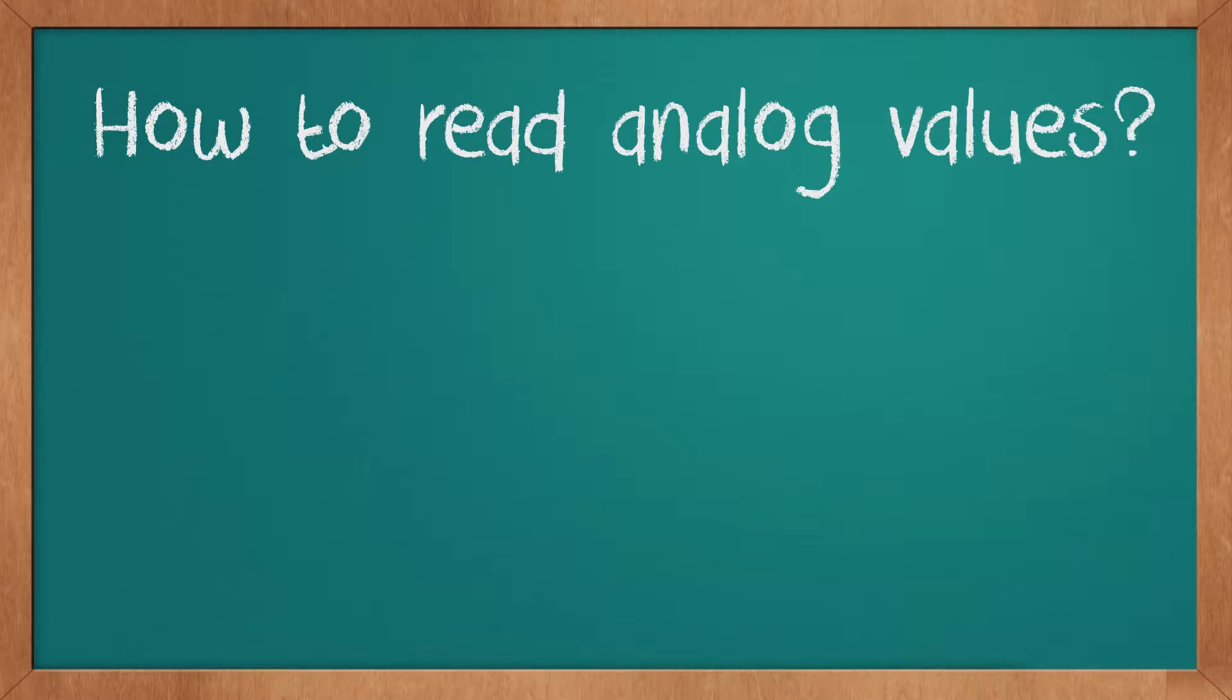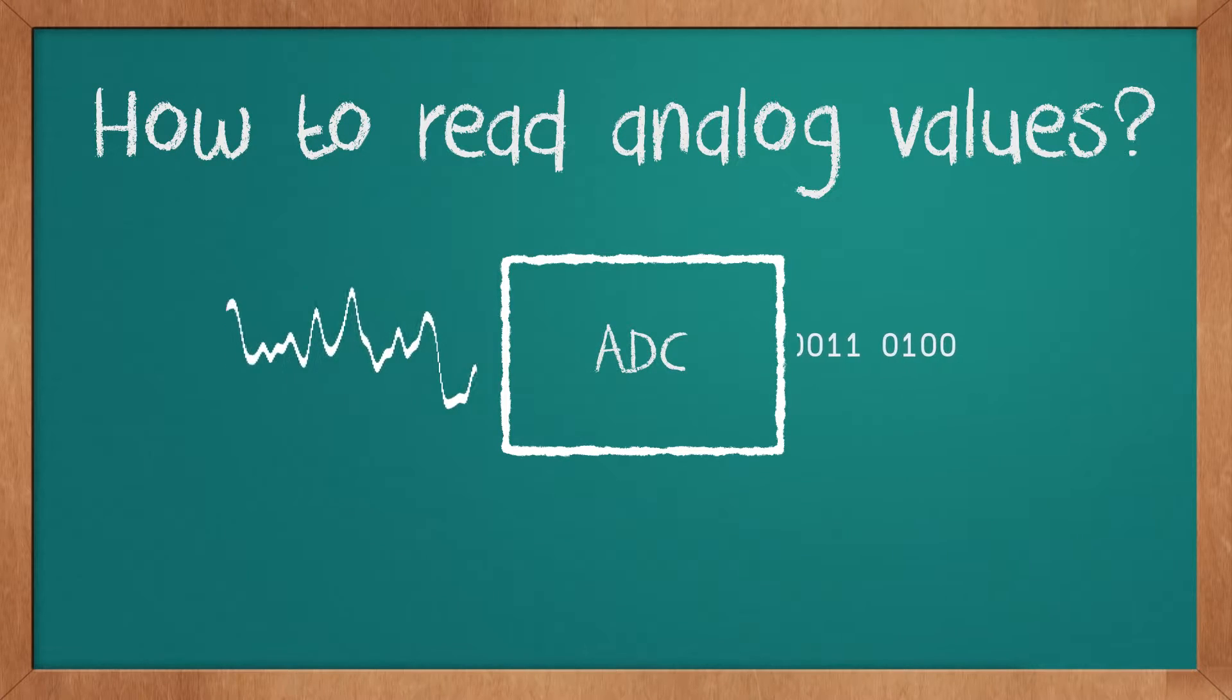How to read analog values? The element that enables an Arduino to read analog values is an ADC, or analog to digital converter. An ADC is a piece of hardware that converts an analog value to a digital value. I'm going to try to explain what an ADC does in the simplest way I can imagine.